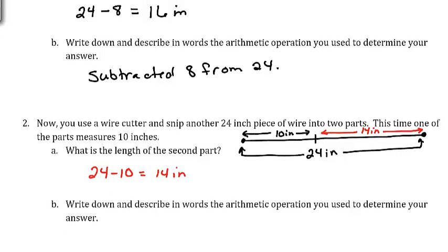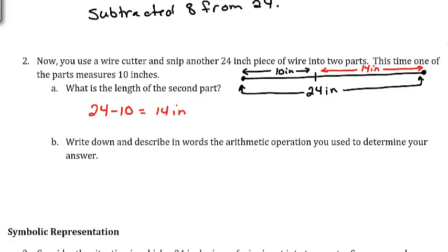Again we're starting out with a total length of 24. If we remove 10 inches, then we're going to have 24 minus 10, or 14 inches. So we subtracted 10 from 24.